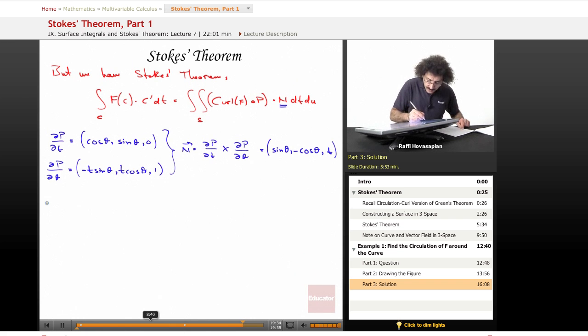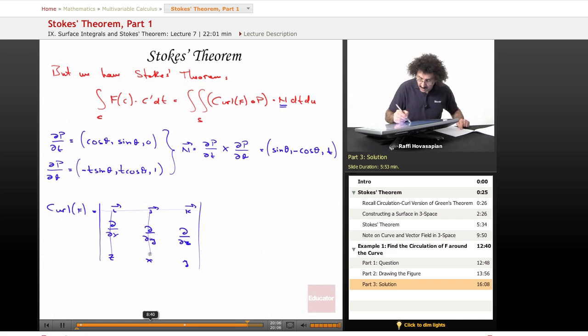So now when I take the curl, so I've taken care of n, now I need curl of F. Well, the curl of F, I'm going to actually do this one explicitly. i, j, k, d/dx, d/dy, d/dz of z, x, and y. When I expand along the top row, I get one, one, and one. So that's the curl of F.